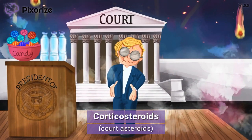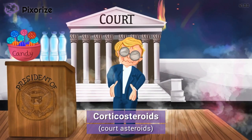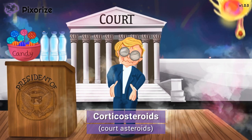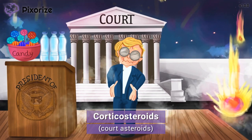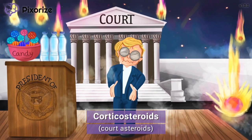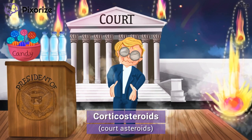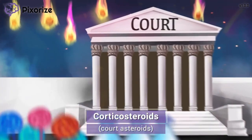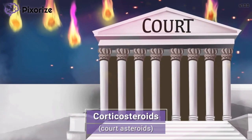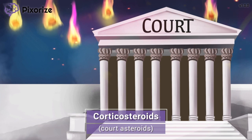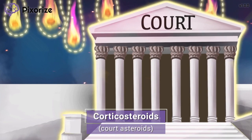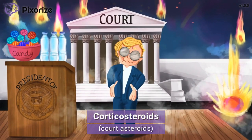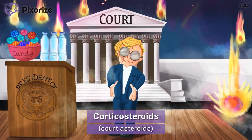Everybody take cover! I was just standing here in front of the courthouse listening to the president give his speech when all of a sudden asteroids began falling from space out of nowhere. These asteroids are a recurring symbol for steroids — an asteroid for steroids. The asteroids are falling over the court here, making them court asteroids. These court asteroids should serve as your memory anchor for the corticosteroids. Let's continue through the mnemonic to learn more, starting with how to recognize the drug names.